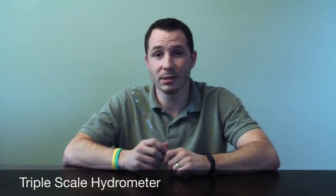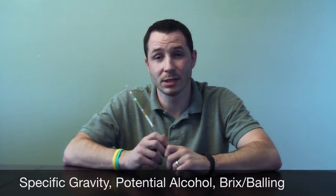Before we take a quick reading, this is a triple scale hydrometer that we're using today. It has the ability to do three readings. The first is specific gravity, the second is potential alcohol, and the third is bricks or balling. Today we're going to be focusing on specific gravity, but it ties very well with the potential alcohol.